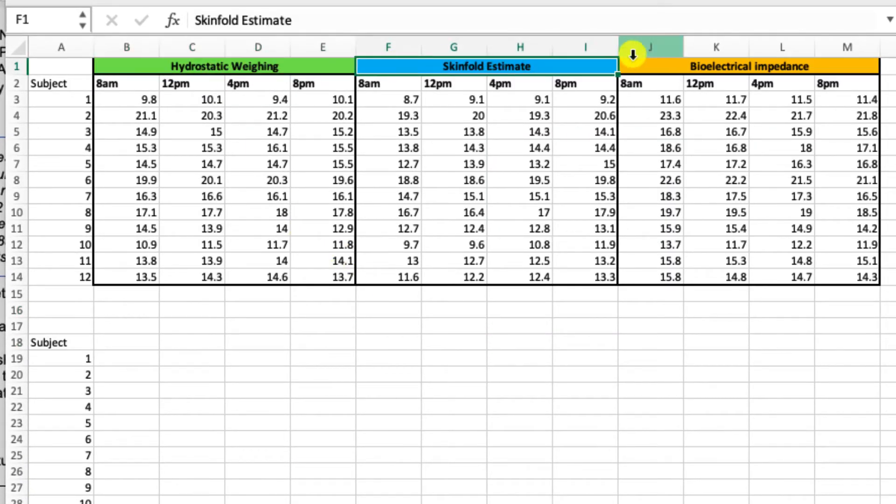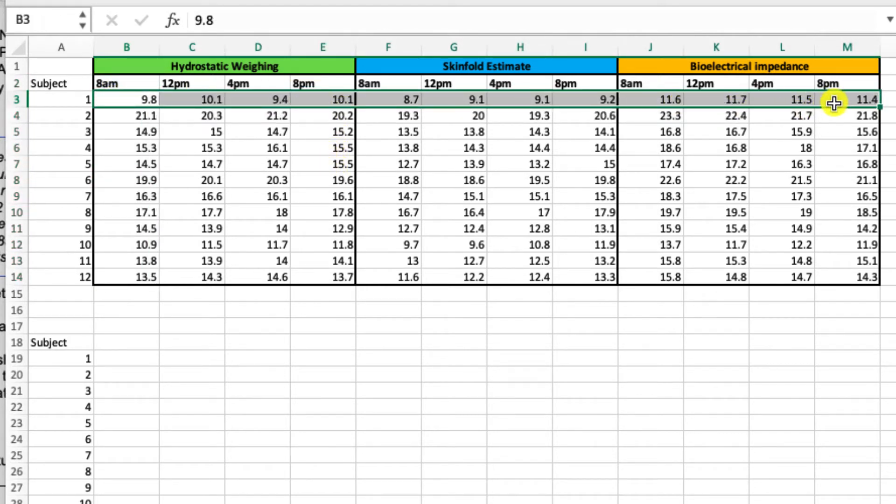So just so you have an idea of what the data looked like, we tested three different methods: hydrostatic weighing, skin fold estimates, and bioelectrical impedance. And then we wanted to see if the body fat measurements we got from each of these methods were different every four hours from 8 a.m. to 8 p.m. So as a result, you end up with 12 measurements total for each subject.